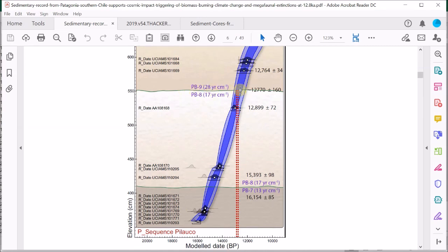Now this blue band is the age depth model along with its uncertainty ranges at one and two sigma, or 67 and 95 percent.